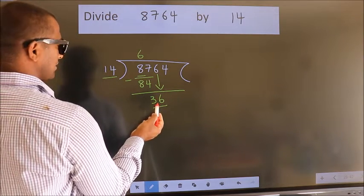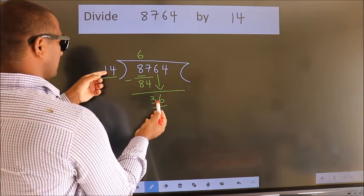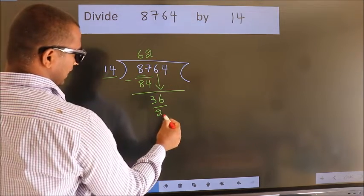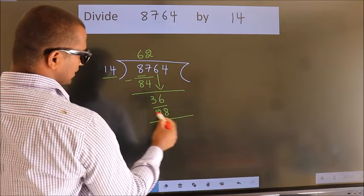A number close to 36 in the 14 table is 14 times 2, which is 28. Now we subtract.